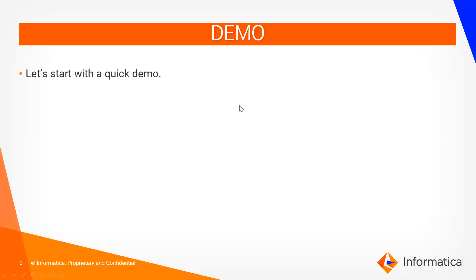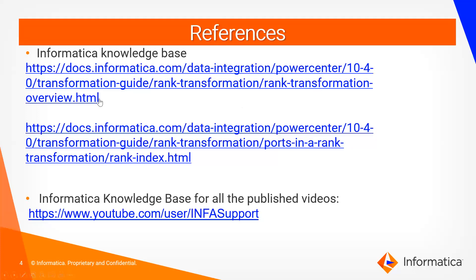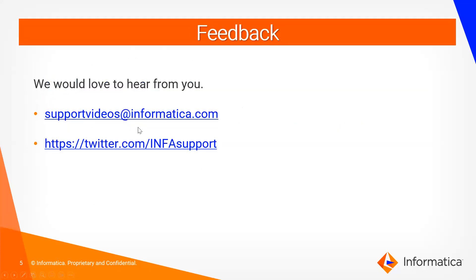Quick summary: rank transformation is an active transformation. It has a group by port and a rank port — you can only specify one rank port, not multiple. You can group by any port except the rank port, and you cannot give conditions on the rank port. Cache files are created during the session: an index cache and a data cache. For references, see the rank transformation overview guide. You can give feedback at supportvideos@informatica.com.